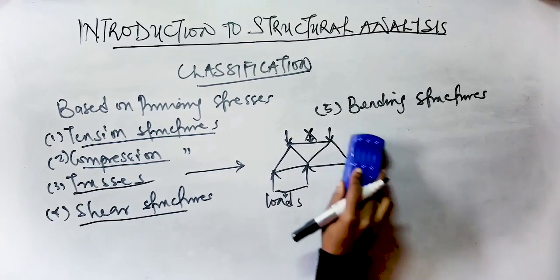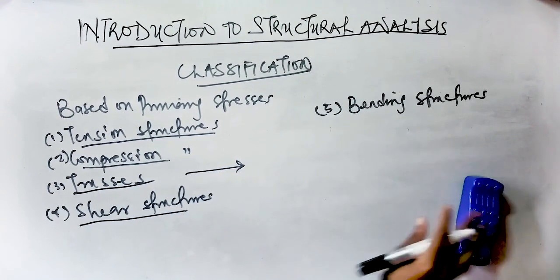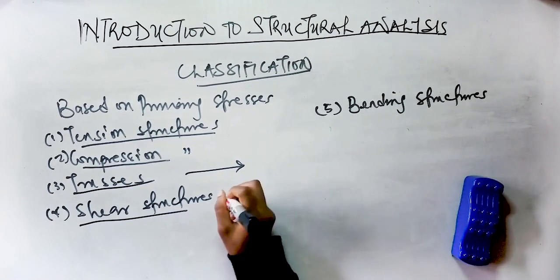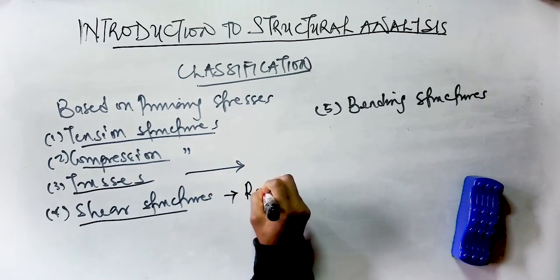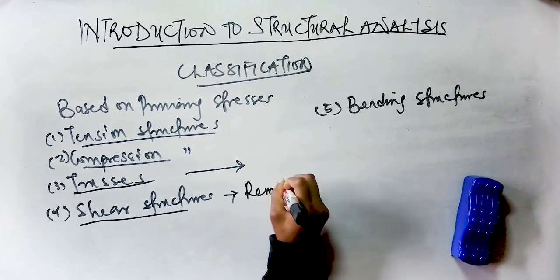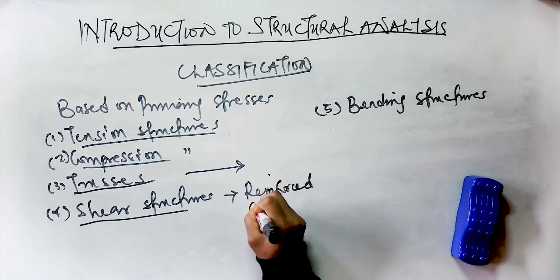Examples of shear structures are reinforced concrete shear walls. They are used in multi-story buildings to reduce lateral movements due to wind loads and earthquake excitations.